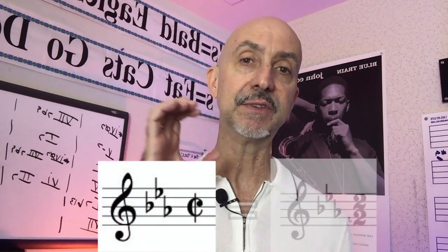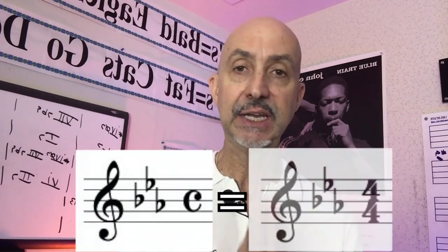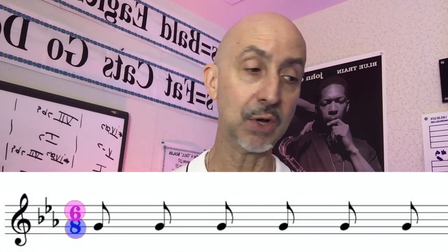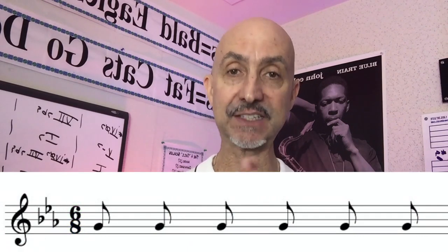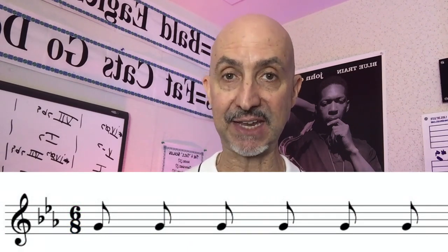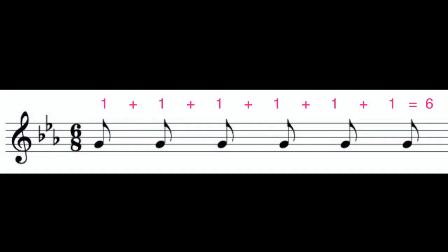You can think of cut time equaling two two, as common time equals four four. Now, if the bottom number is an eight and the top number is a six — for example, six eight — there are going to be six beats in a measure and the eighth note gets one beat. Let's take a look at these following groupings. In the first measure, we have six eighth notes for a total of six beats.